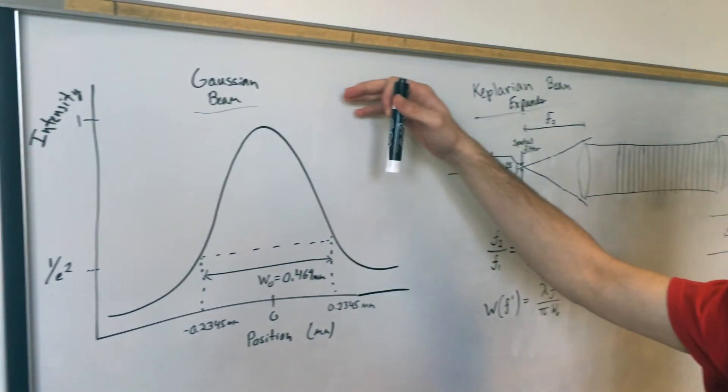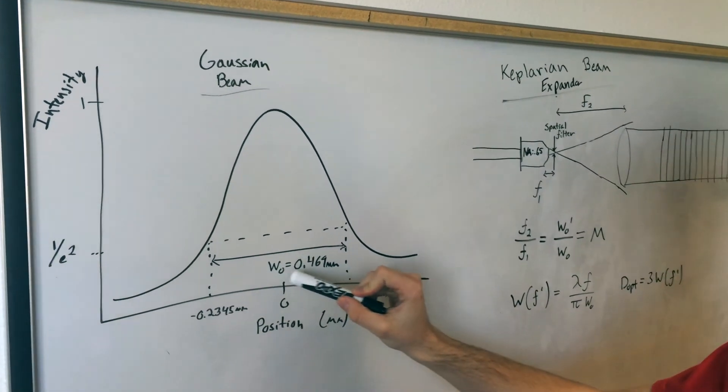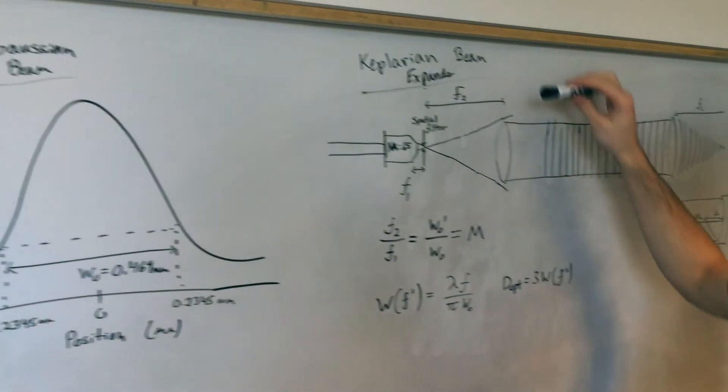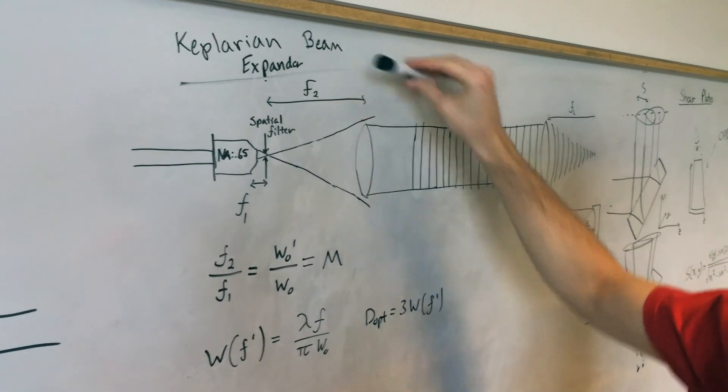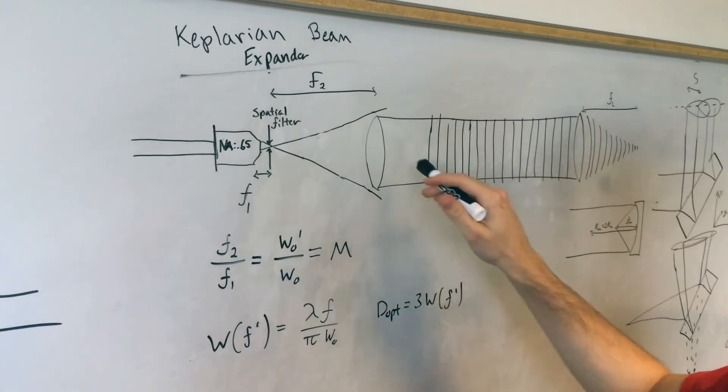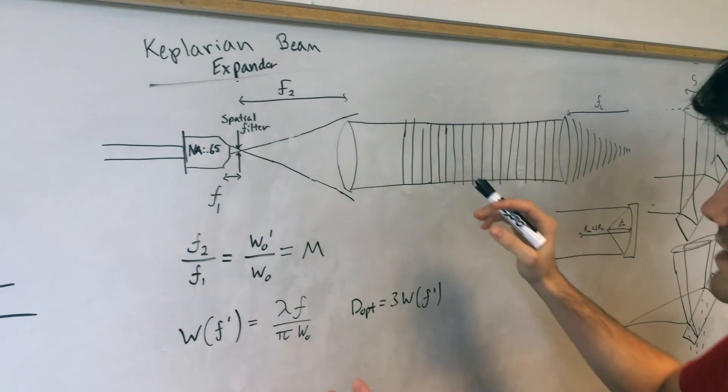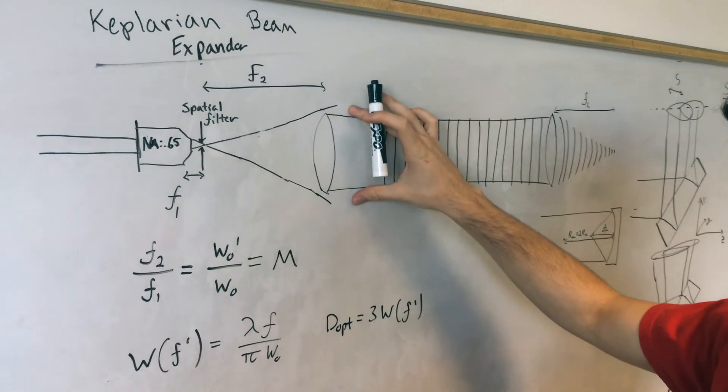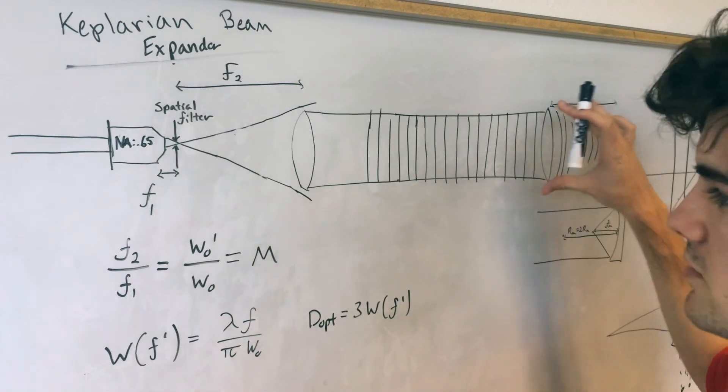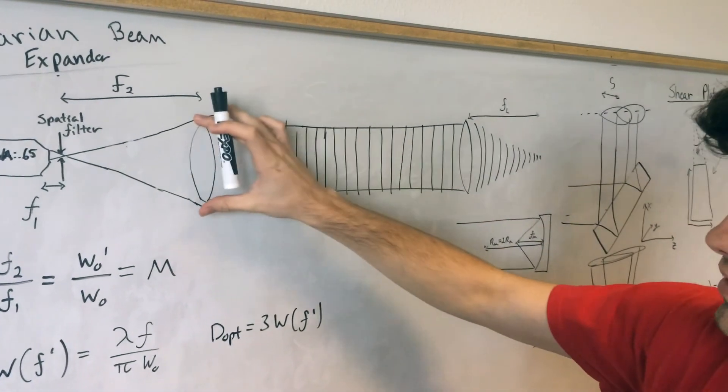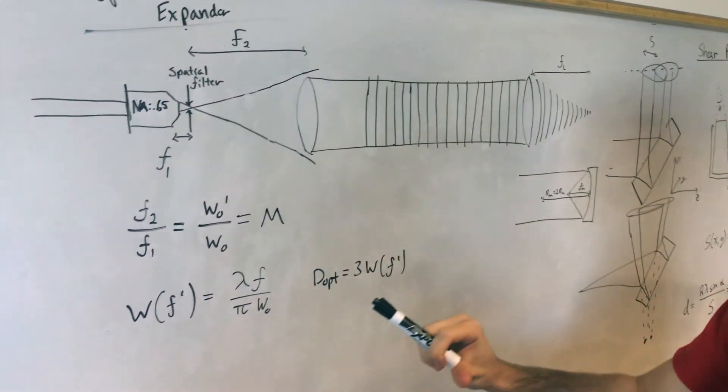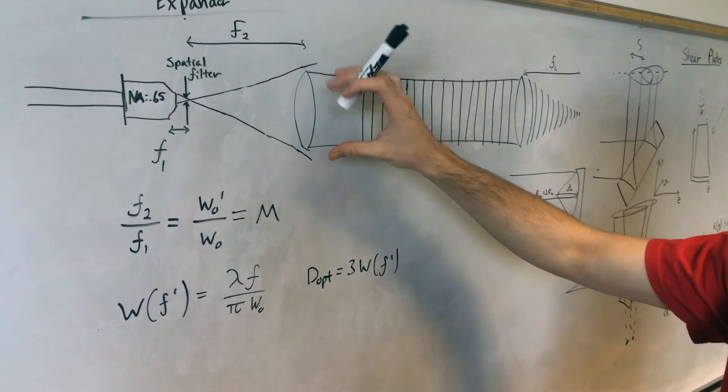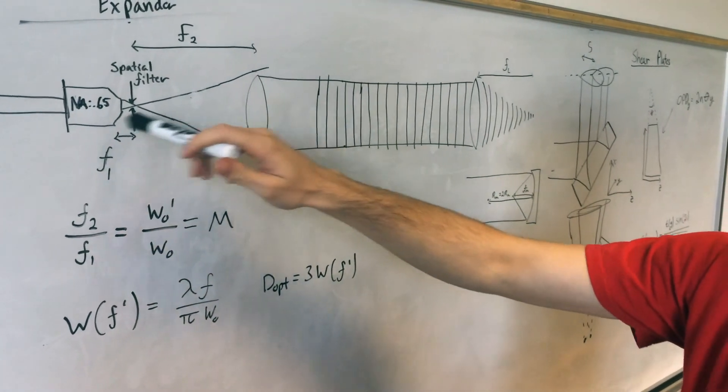So the theory for this lab, we have the Gaussian beam that we worked with last time, and the beam waist of 0.469 millimeters, which we then put into our Keplerian beam expander with a spatial filter and a microscope objective and a collimating lens. Basically what we did here is we filtered out the noise from the lens and expanded it to have a new beam waist so that we could fill the shear plate later on. To fill this we had to calculate that using the expansion ratio of the lens and optimizing the focal length of our choices here.